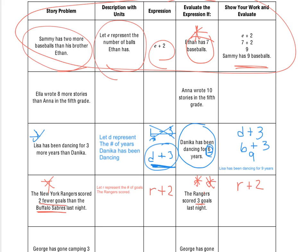And it says, the Rangers scored three goals last night. So, three plus two. And that's going to get me five. And what that means is, the Sabres scored five goals.